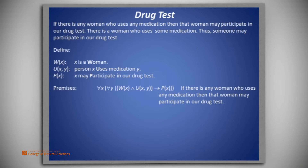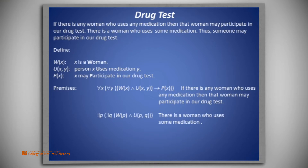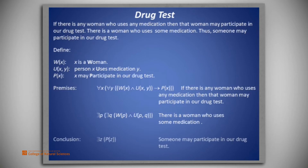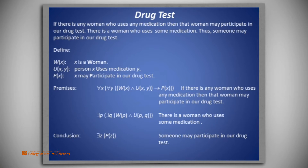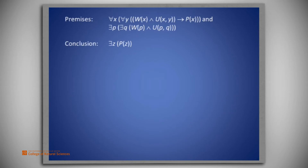From the story and these definitions we may represent two premises. The first is: for all x, for all y, W(x) and U(x,y) imply P(x) — that is, if there is any woman who uses any medication, then that woman may participate in our drug test. The second premise is: there exists p, there exists q, such that W(p) and U(p,q) — that is, there is a woman who uses some medication. The conclusion we seek is: there exists z such that P(z), meaning someone may participate in our drug test.